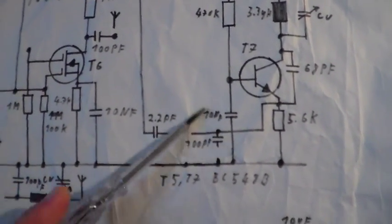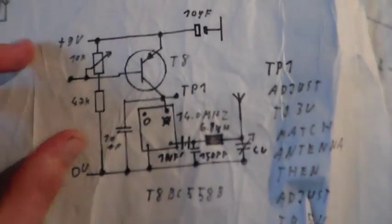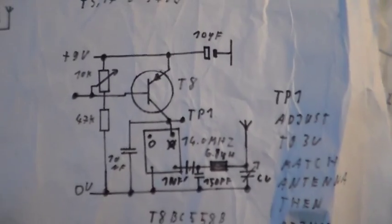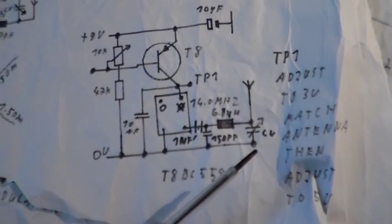You can also take a so-called crystal oscillator and modulate it with a PNP transistor. That will give you approximately a 20 milliwatt transmitter.